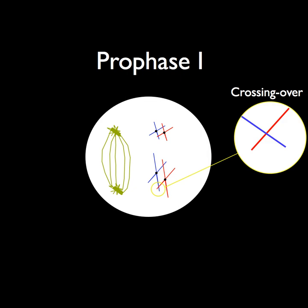In prophase I, it is common that an event known as crossing over can occur. If this happens, part of the first chromosome pair will switch part of its homogelous partner, creating a more diversely coded chromosome.